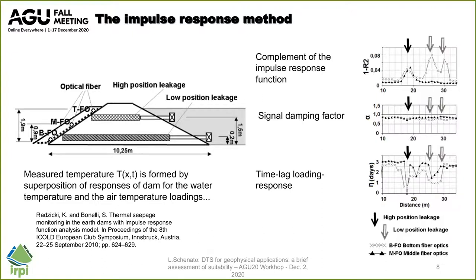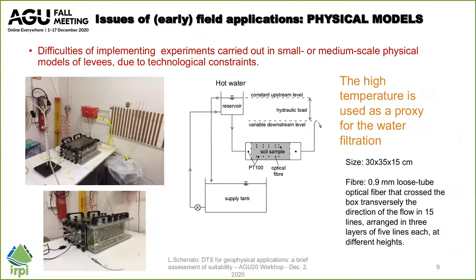Many other signal processing methods may be cited, applied not only to the temperature traces but also directly to the optical signal — that may be the Stokes or anti-Stokes backscatter signal if you go for Raman DTS, but could also be the Brillouin spectra or the Rayleigh spectra for Brillouin- or Rayleigh-based DTS systems. Another issue often reported is the lack of physical models to validate the data analysis performed on data collected in the field.